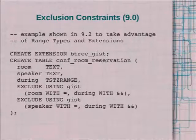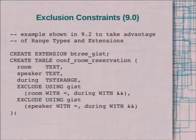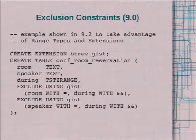In 9.0 you could use exclusion constraints. Two things from 9.2 I used here: one is CREATE EXTENSION which makes the example more self-contained; the other is the range type — which you can think of like the period data type I just described. In 9.0 you'd have to use the period type instead. The range type is the newer way to do it and it's more flexible, so I didn't want people copying and pasting and thinking they needed the period data type.